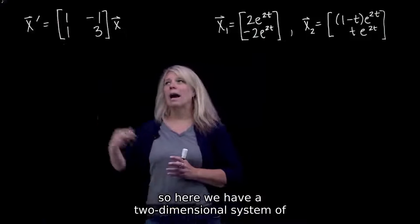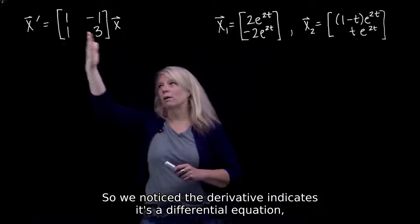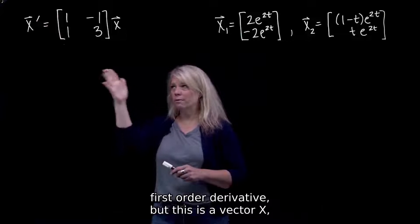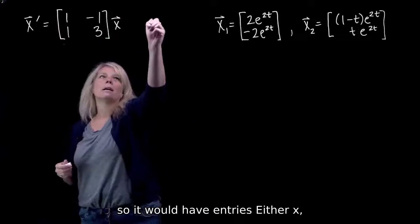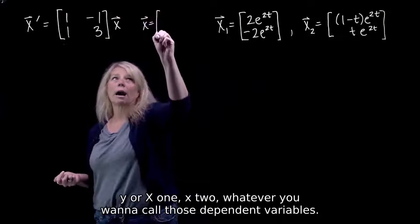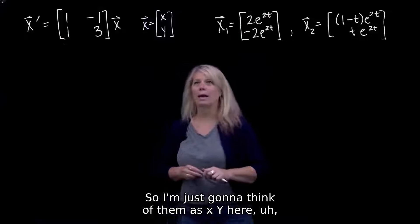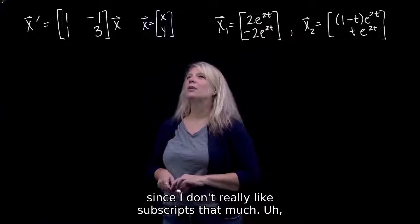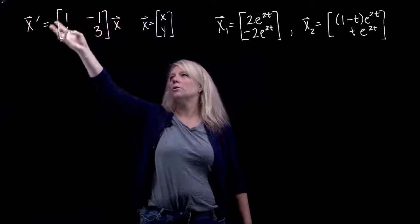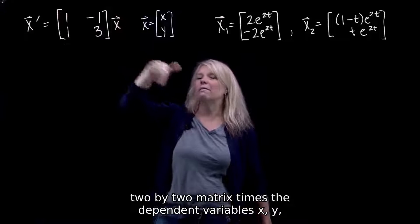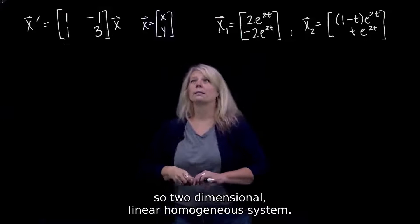Here we have a two-dimensional system of differential equations. The derivative indicates it's a differential equation with a first-order derivative. But this is a vector x, so it would have entries x, y or x1, x2 — whatever you want to call those dependent variables. So two dependent variables and their derivatives equal to a 2 by 2 matrix times the dependent variables x, y. So: two-dimensional, linear, homogeneous system.